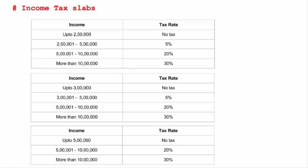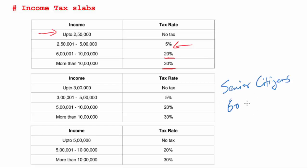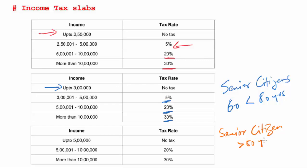We will first look at the Income Tax slabs. If your earning is up to Rs. 2,50,000 in a year, you don't have to pay any tax. If your income lies between Rs. 2,50,000 and Rs. 5,00,000, you have to pay 5% tax, followed by 20% and 30% for higher brackets. For senior citizens above 60 and below 80 years, there is a relaxation: up to Rs. 3,00,000 no tax, then 5%, 20%, and 30%. Senior citizens above 80 years pay no tax up to Rs. 5,00,000, then 20% up to Rs. 10,00,000, and 30% after that.